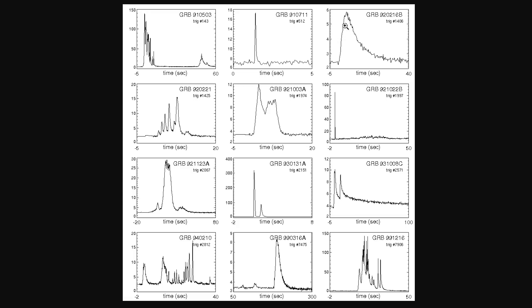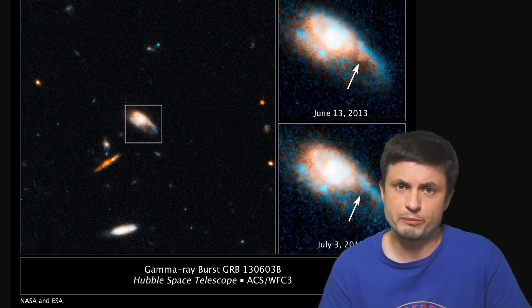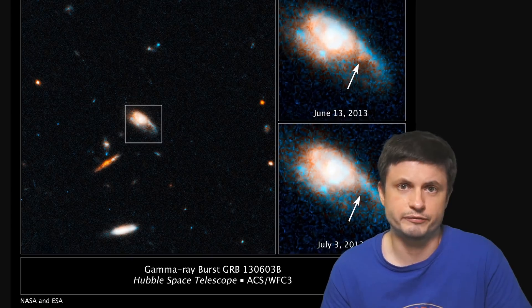Some of them are extremely short, some of them are more or less long, some of them seem to go up, go down and then go up again, and some of them seem to happen many times. Which of course suggests that gamma-ray bursts could actually be produced in different ways.